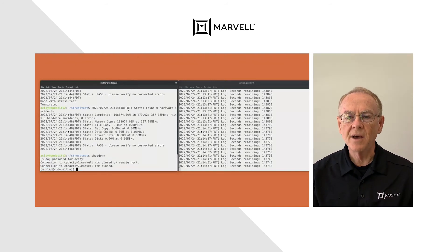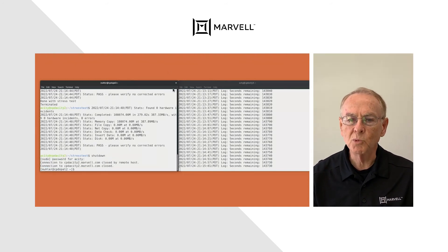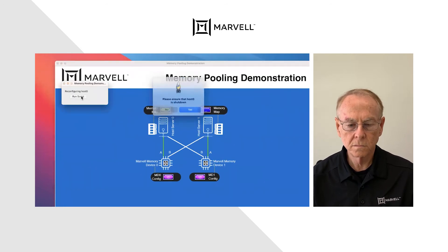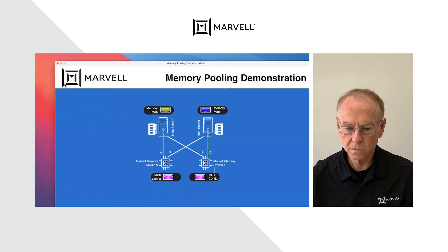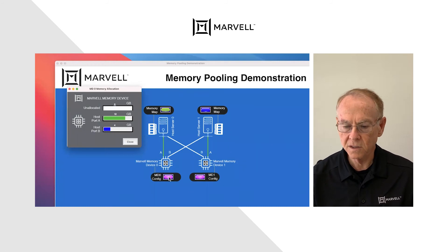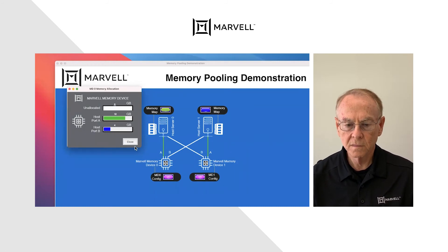Now that the host has shut down, I'll use the dashboard to allocate more memory from each device to host zero. As you can see, host zero now has 12 gigabytes allocated from MD zero and eight gigabytes allocated from MD one.